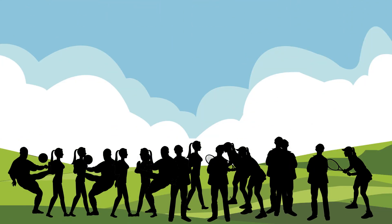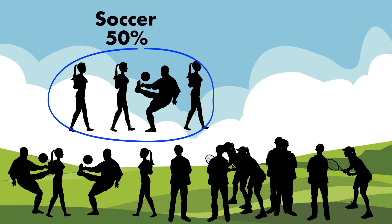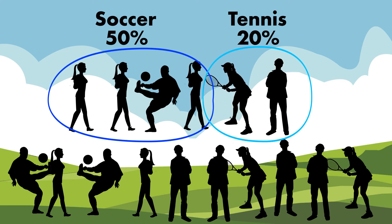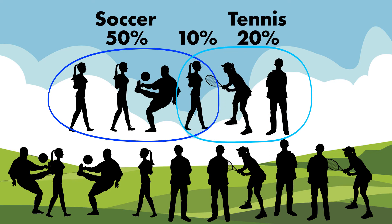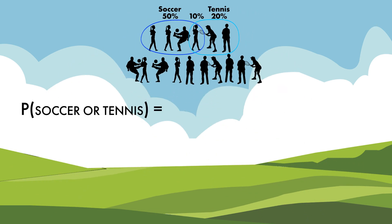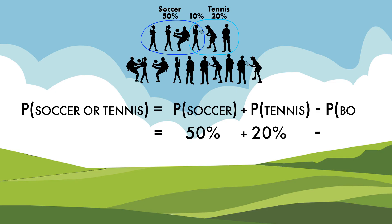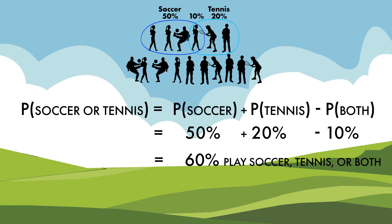As a final example, consider a group of students: 50% play soccer, 20% play tennis, and 10% play both soccer and tennis. What's the probability that a randomly selected student plays at least one sport? We can reword this as: what's the probability a student plays soccer or tennis? Using the formula, we add the probability of playing soccer to the probability of playing tennis and subtract the probability of playing both. The result is a 60% chance.